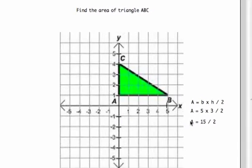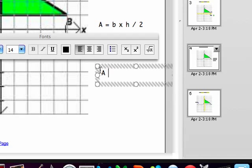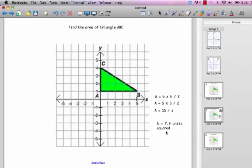5 times 3 divided by 2. That, of course, would equal 15. We want to divide that by 2 as well. And remember that this was, there was no units given, so we're going to give it area equals 7.5 units squared.